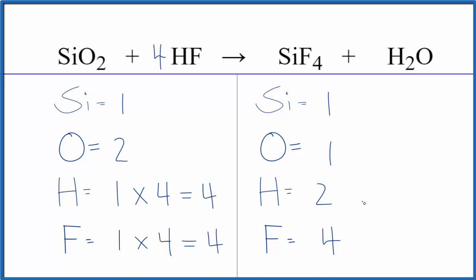Let's just fix the hydrogens next. We could put a two in front of the H2O, two times two, that would give us four, and then one times two for the oxygen, that gives us two, and we're done. This equation is balanced.